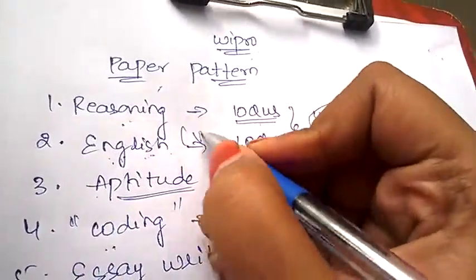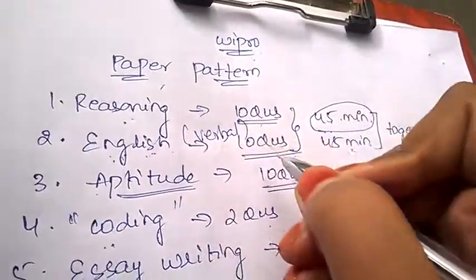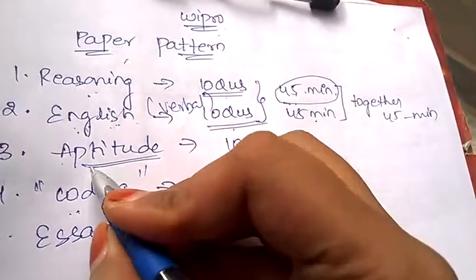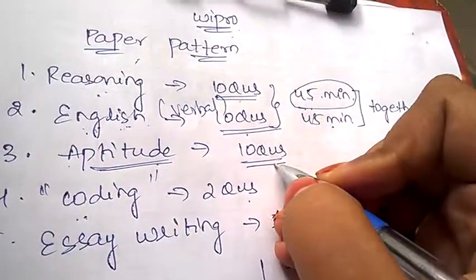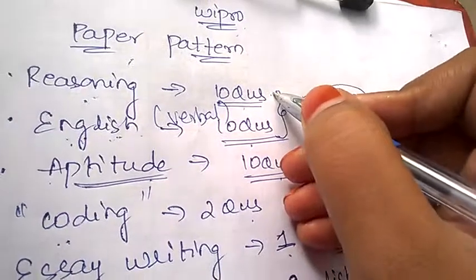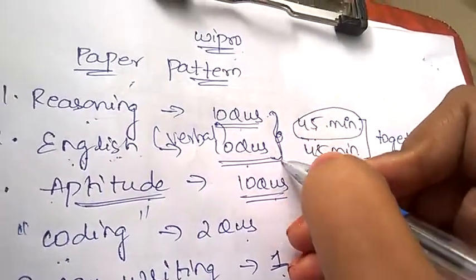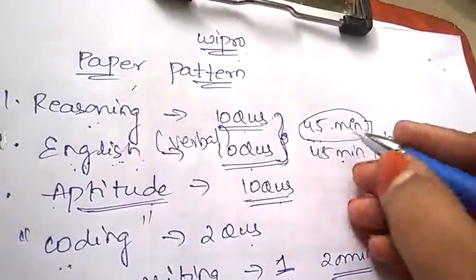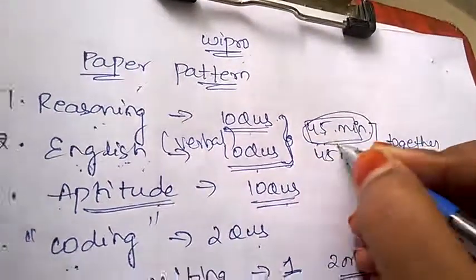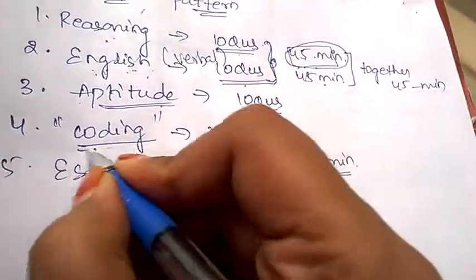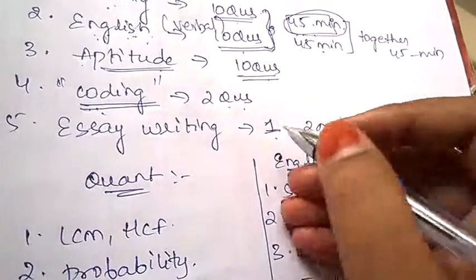Under quantitative aptitude, they'll be asking 10 questions. For both reasoning and English, they'll be giving you 45 minutes together. Later, they'll be asking you two coding questions, and you need to write one essay in 20 minutes.